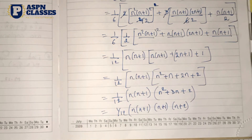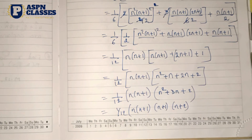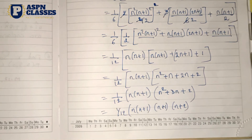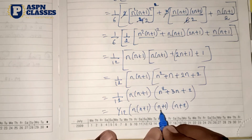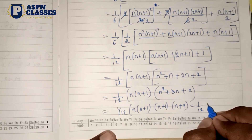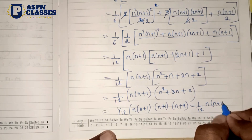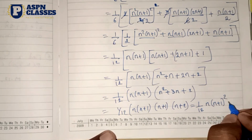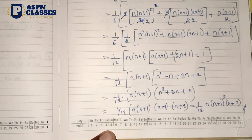So students, this is a very important question in the annual exam, so you need to practice with care. If you have doubts or confusion, please reply to us in the comments box. The final answer for this series is: 1/12 × n × (n+1)² × (n+2). This is the complete result.